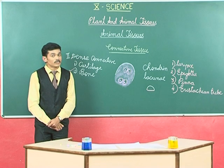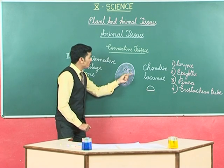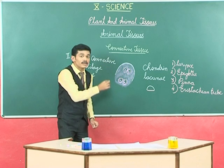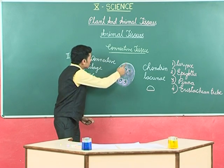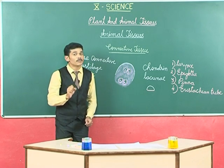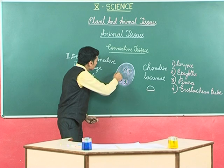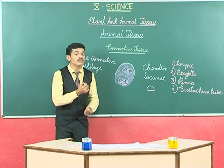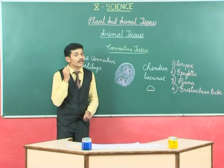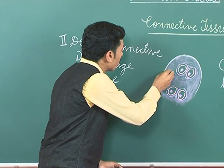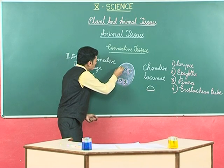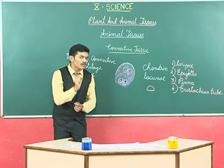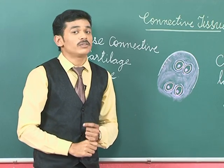A key point to note is that the perichondrium contains blood vessels and nerves, but there are no blood vessels or nerves in the main part of the cartilage itself. The entire cartilage is avascular. It receives oxygen and nutrients by diffusion from the perichondrium. This avascular nature is one of the peculiar characteristics of cartilage.